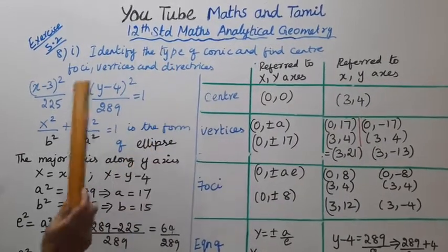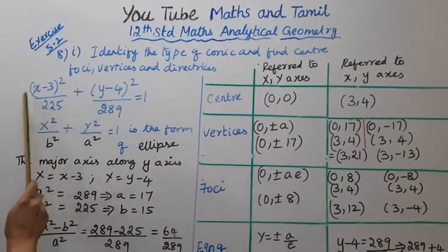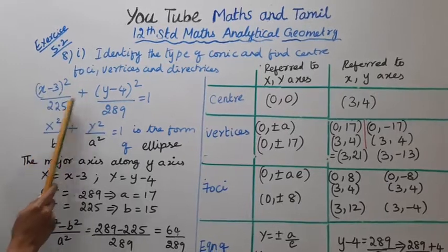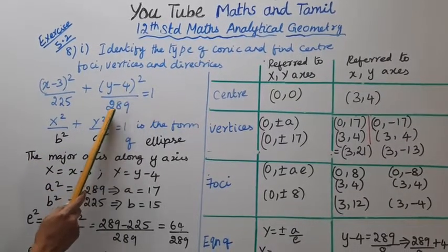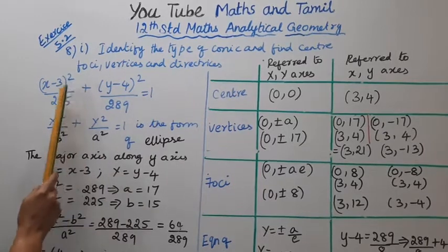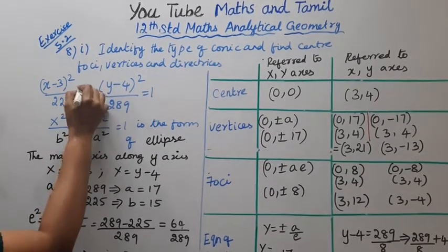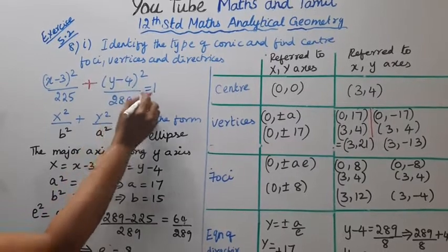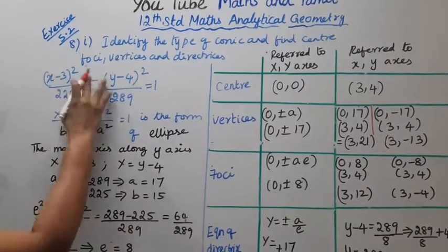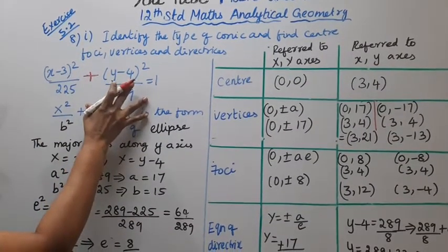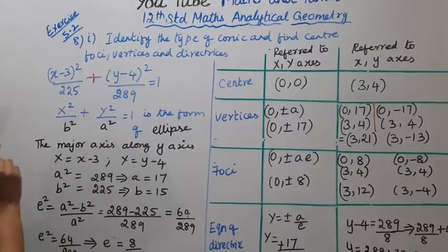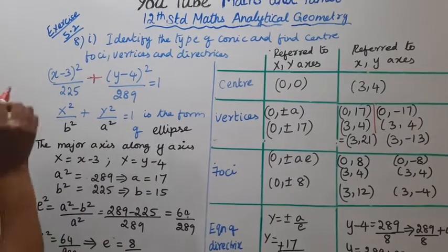The equation: (x-3)²/225 + (y-4)²/289 = 1. x²/a² + y²/b² = 1 is the form. This is an ellipse.